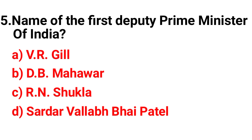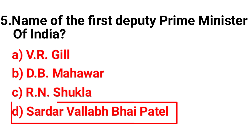Question 5. Name of the first Deputy Prime Minister of India? Option A: V.V. Giri. Option B: D.B. Mahavir. Option C: R. Ansugla. Option D: Sardar Vallabhbhai Patel. The correct answer is Option D, Sardar Vallabhbhai Patel.